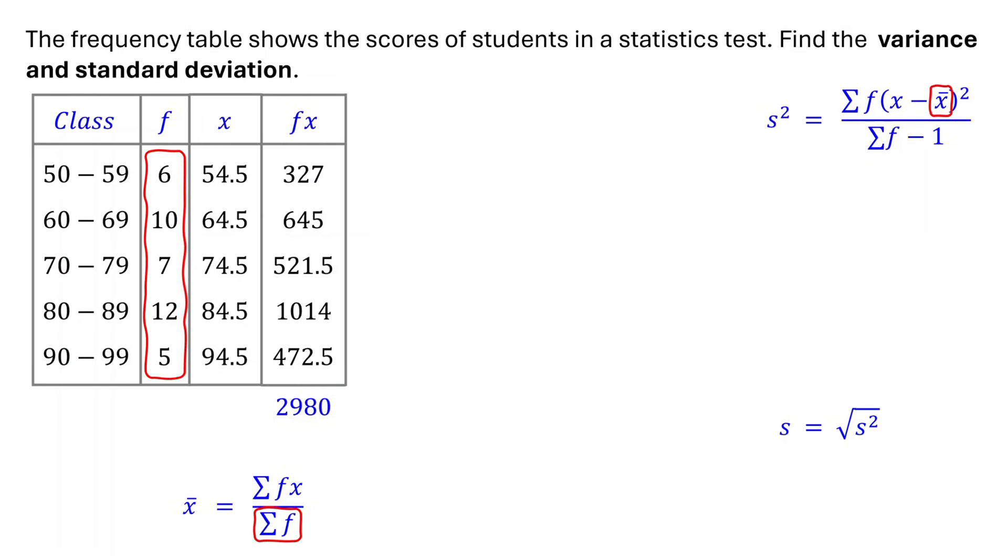Next, add up all the frequencies to get the sample size. This gives a total of 40. Finally, divide the sum of the products by the total frequency. This gives us a mean test score of 74.5. Now write this down in the mean column of the table.